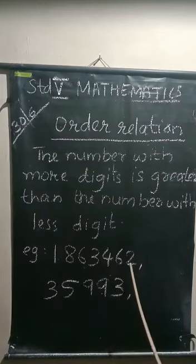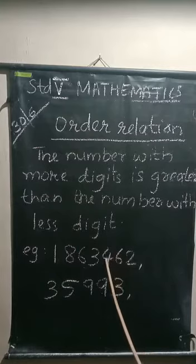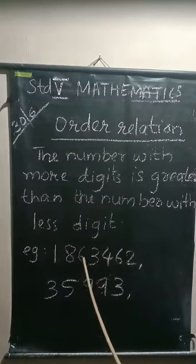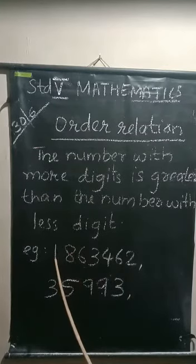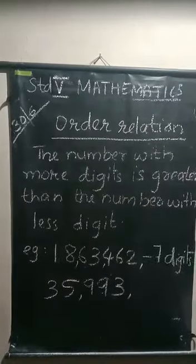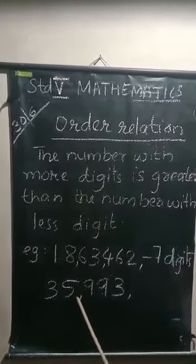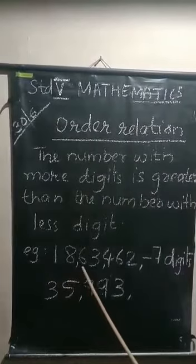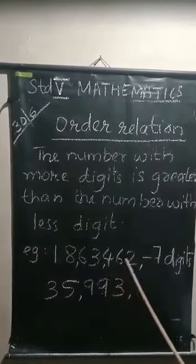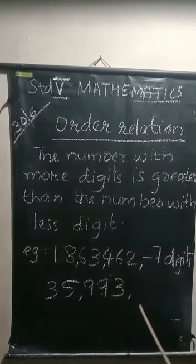Let us count. 1, 2, 3, 4, 5, 6, 7 digits. 18,63,462.